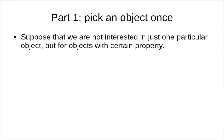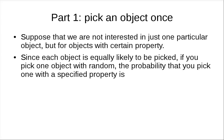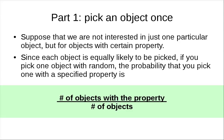So now, if you are not interested in just one particular object, but in objects with certain properties, what would be the probability of picking an object that has those certain properties? Because each object is equally likely to be picked, and if you have many objects with this property, then you have a higher probability. The probability depends on the number of objects with the property.